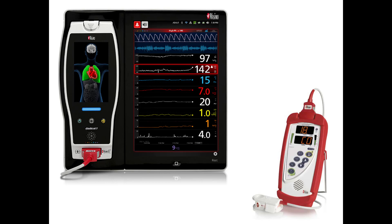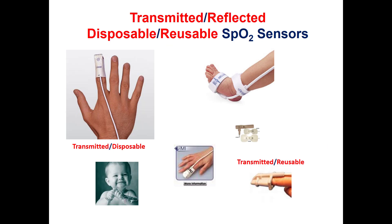We can classify the pulse oximeter depending on how many wavelengths are used. We have now some images for reusable and disposable pulse SpO2 sensors. The transmitted type disposable sensor is used only a single time and then discarded. This disposable transmitted SpO2 sensor is used on the finger.